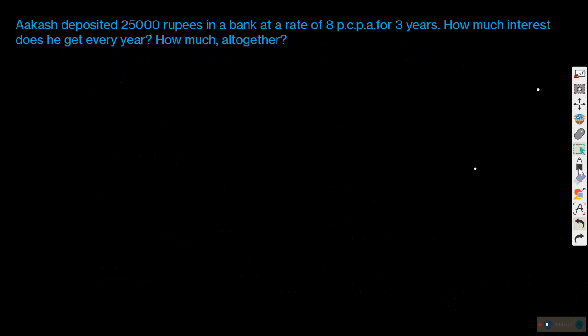Here is another situation. Akash deposited rupees 25,000 in a bank at the rate of 8% per annum. Unlike the last two examples where money was borrowed, here Akash deposited money in the bank. The rate of interest is 8% per annum, and he deposited for 3 years. How much interest does he get every year, and how much altogether?